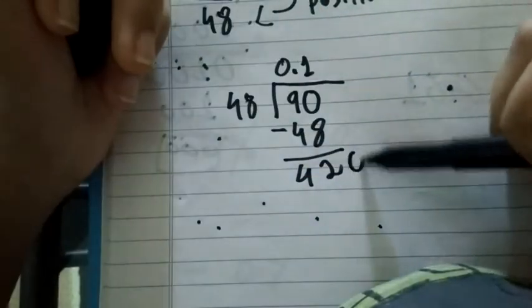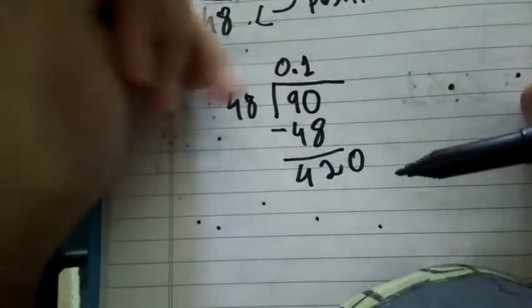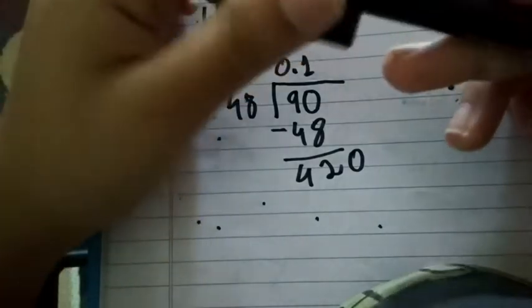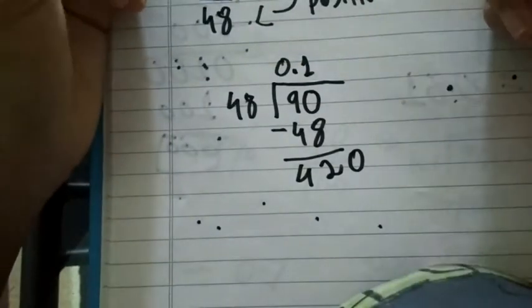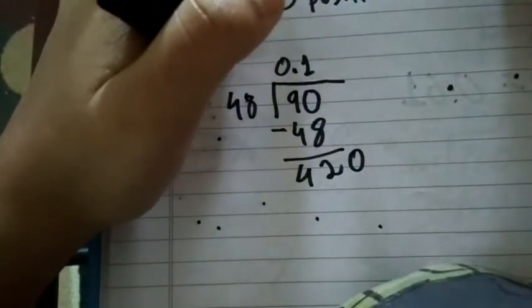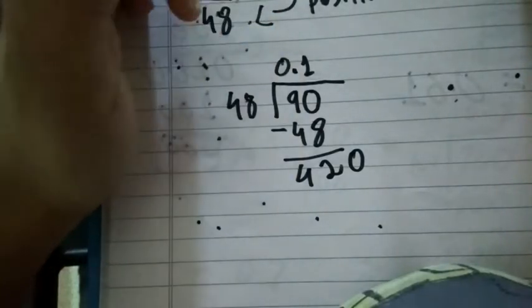And now we need to just replace a zero over here. 480. So how many times 420 comes in, 42 comes in 42. So I just multiply. So I think it's 8. I'll just check it out. 48, 48 into 8, so it's equal to 32.